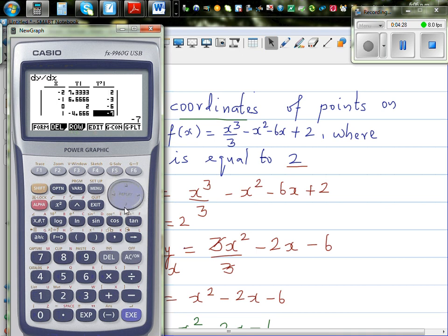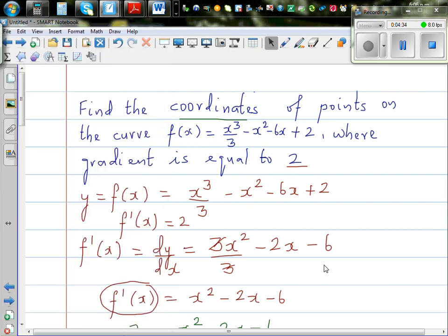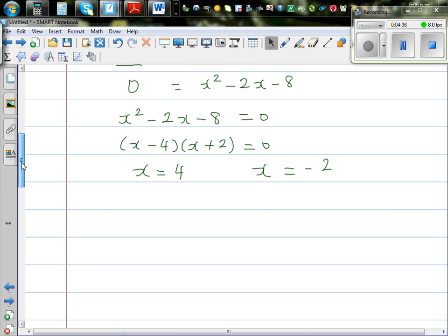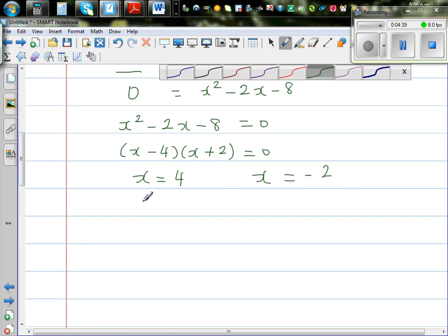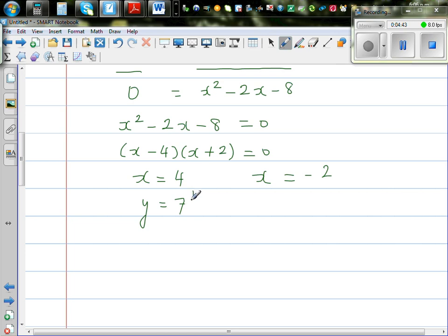And when you go to 4, it is minus 16 and 2 thirds. So we can say the coordinates are, your y coordinate is 7 and 1 third, and your y is minus 16 and 2 thirds.